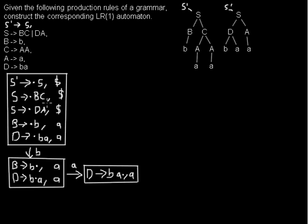Let's take D next. If we used rule D → ba and read both b and a, we've seen the full right-hand side. That means we got a full D, so we go back to the state where we started processing that rule and move the dot over D in the rule S → D•A.